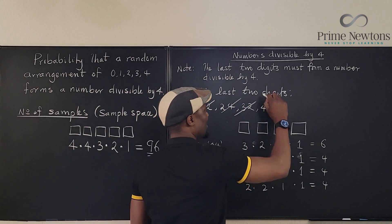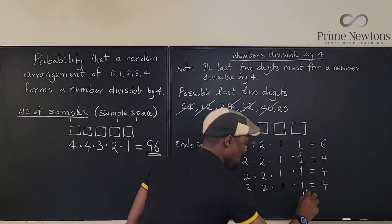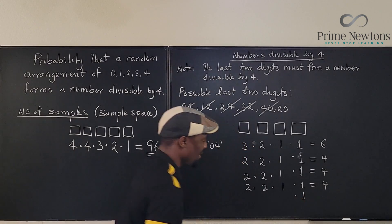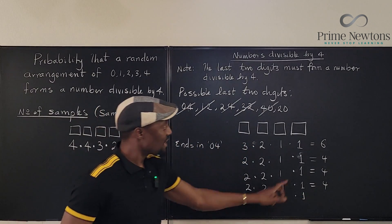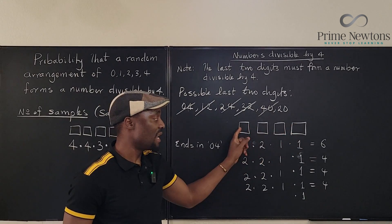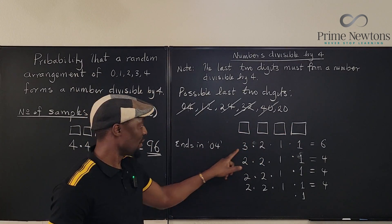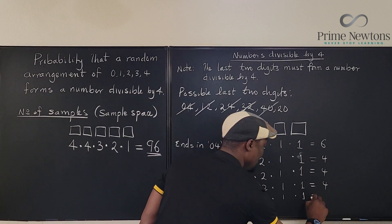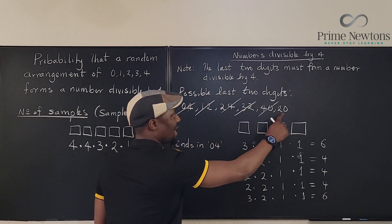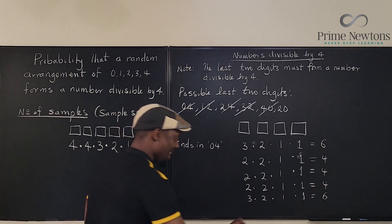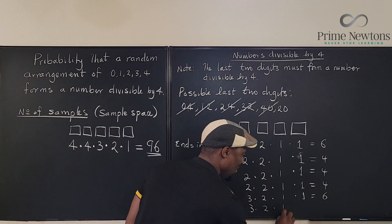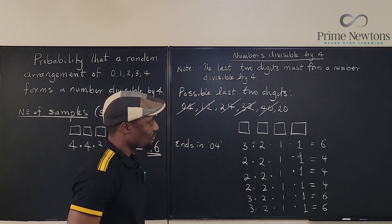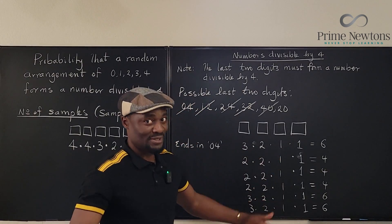For endings in 40: the block is 40, and since 0 is locked into the block, we can use any of the remaining three digits for the first position. So it's going to be 3 options, then 2, then 1 — giving 3 × 2 × 1 = 6. For endings in 20: it's the same situation — 3 × 2 × 1 = 6.